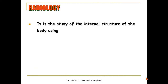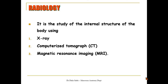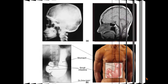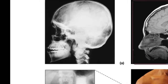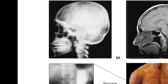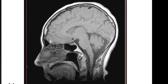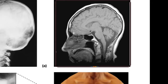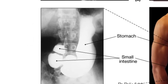Finally, we can use radiology to study the internal structures of the body using either X-ray, CT, or MRI, or any other different modalities. Here is the X-ray of the skull — it shows only the bones. Here the MRI — we can see the details of the soft tissue like the brain, the brainstem, and cerebellum.